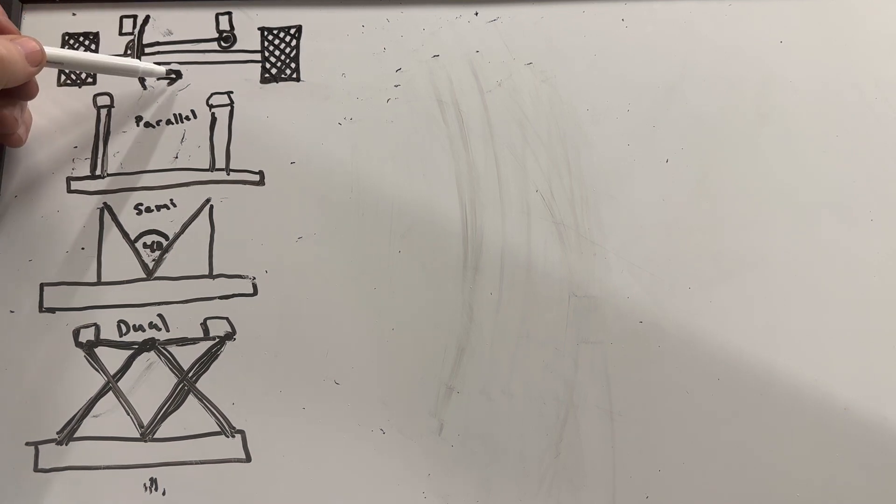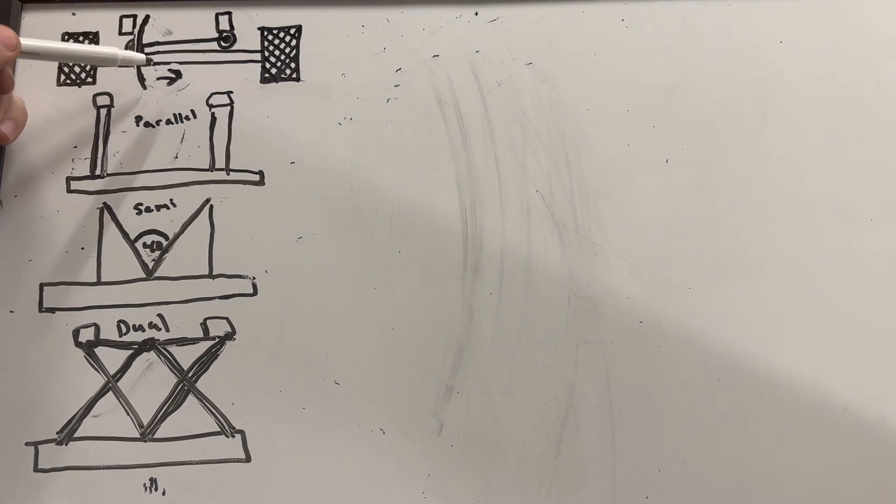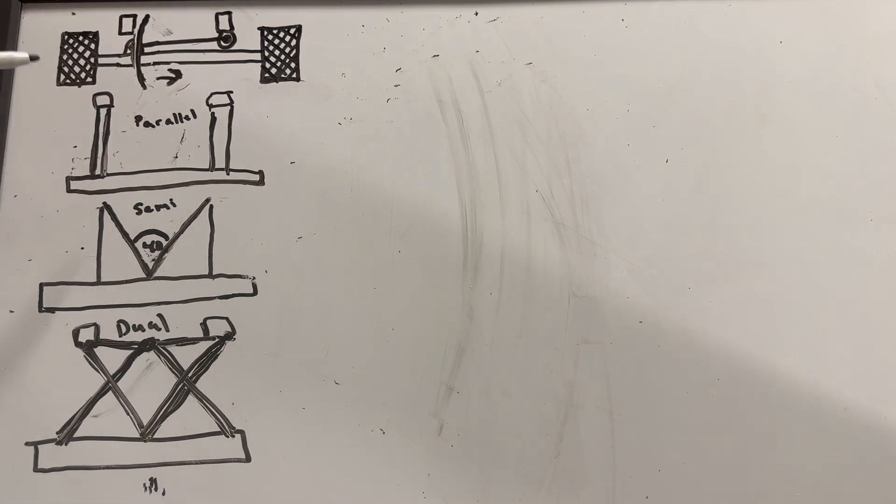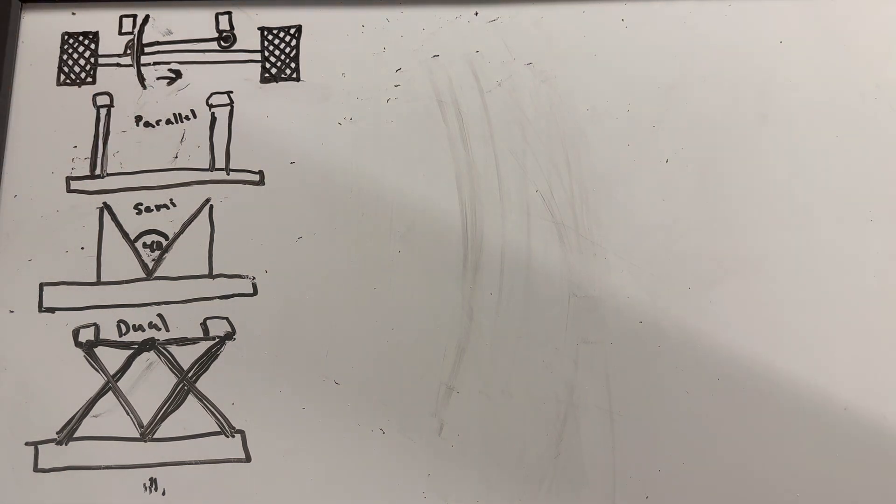That's to get your starting point centered. Then it's going to control your side to side movement based off the angle and length. That's going to dictate how much your axle moves side to side. Now we're going to go over four links.